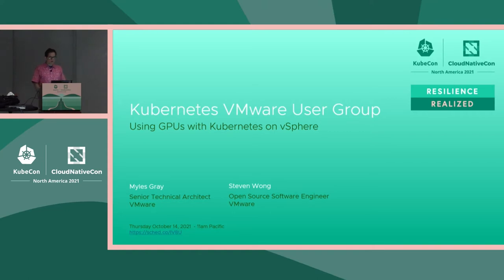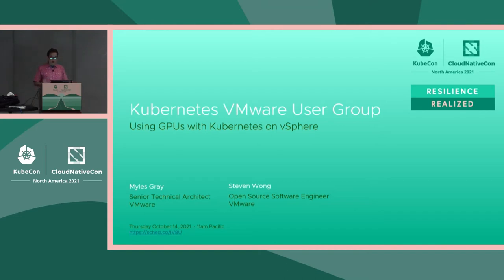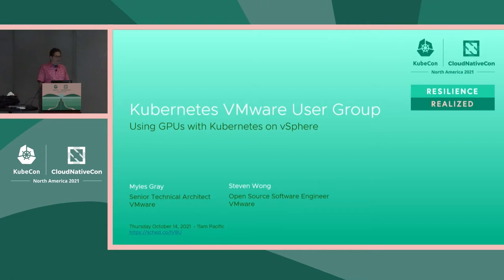I'm Steve Wong, co-chair of the Kubernetes VMware User Group. Also presenting is Miles Gray from the UK, but because of travel difficulties he couldn't be here. A word about the User Group: we're inclusive of all users running all forms of Kubernetes on VMware infrastructure. This applies to distributions like Anthos, EKS Anywhere, OpenShift, Rancher, or pure upstream Kubernetes open source.